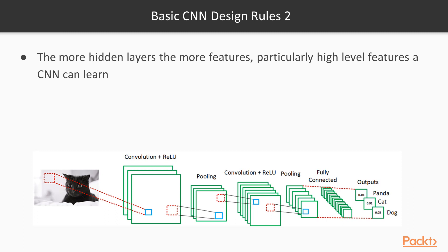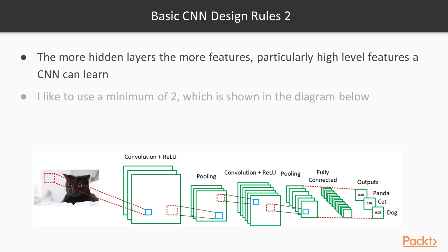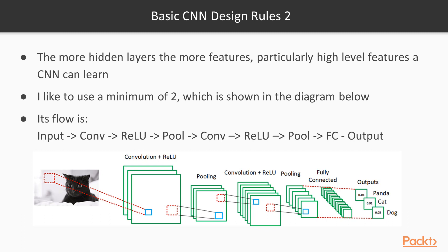I like to use a minimum of 2 hidden layers, as shown in the diagram. Typically you can use at least 3 if you have a complex image dataset. The reason is that low-level layers learn simple details like edges, mid layers learn simple structures, and higher layers learn more complex structures. This is the simple flow: Conv→Pool, Conv→Pool — some basic guidelines in designing CNNs.